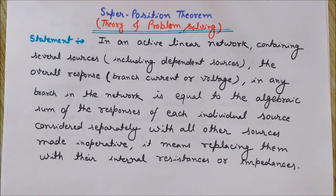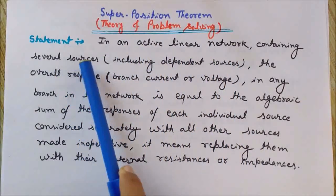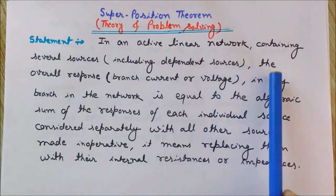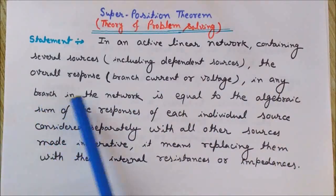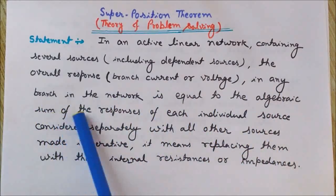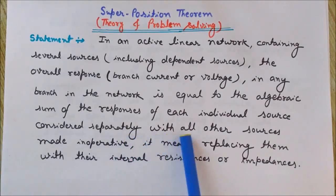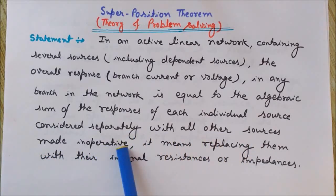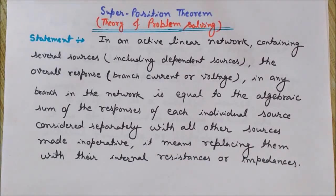Now I will tell you the formal definition of the superposition theorem: In an active linear network that contains several sources — these sources may be dependent sources also — the overall response, meaning the branch current or voltage in any branch of the network, is equal to the algebraic sum of the responses of each individual source considered separately, with all other sources made inoperative.